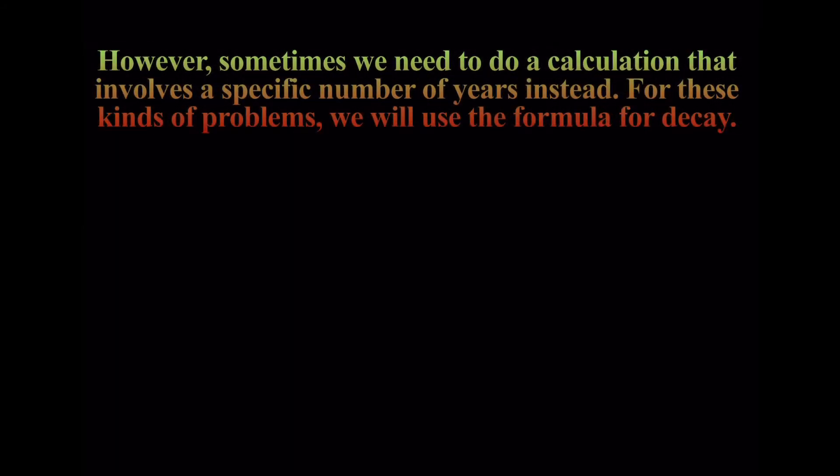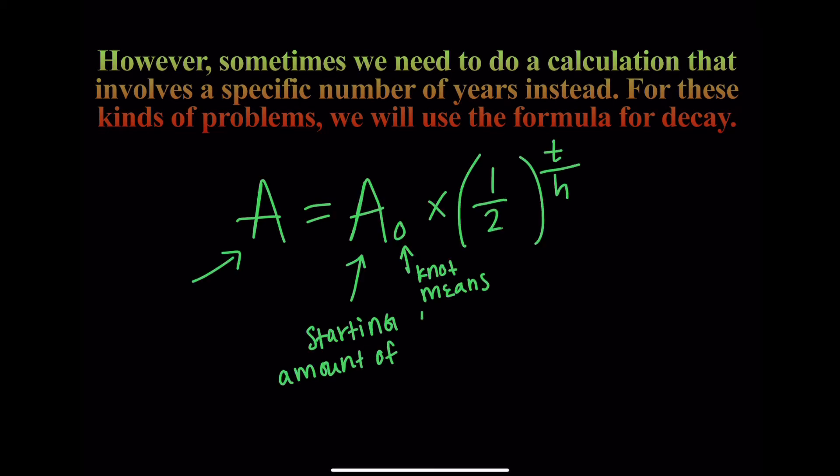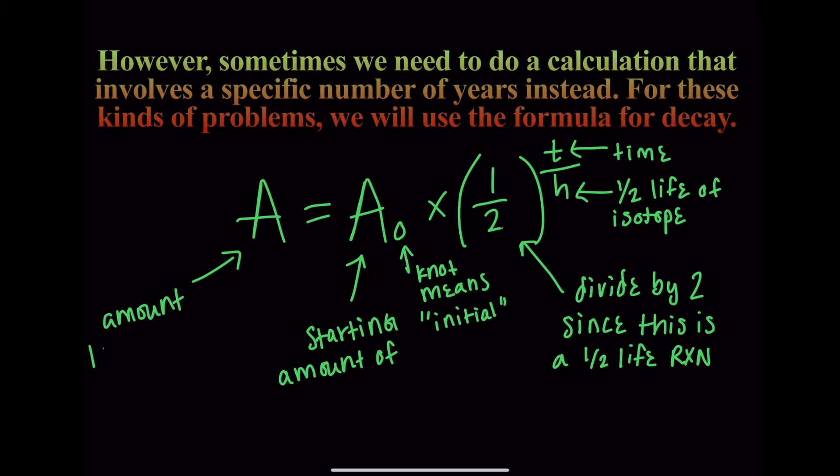But sometimes we need to do a calculation that involves a specific number of years instead of a number of half-lives. So for these kinds of problems, we're going to use the formula for decay. And we have talked about this formula a lot in class. And I wrote what each variable means.